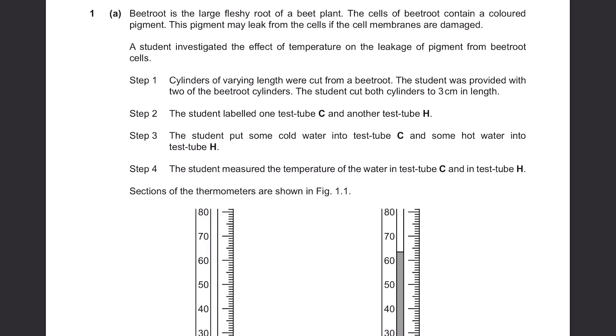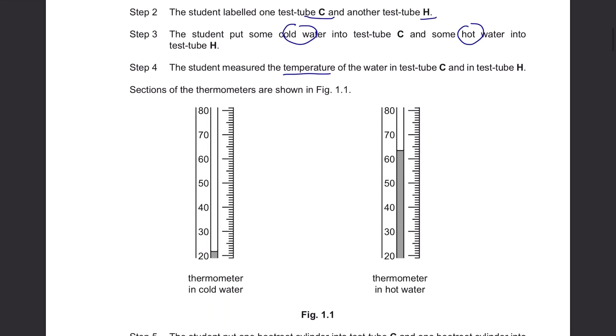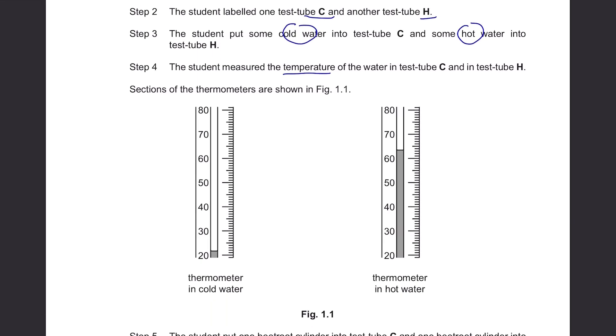Beetroot is the large fleshy root of a beet plant. The cells of beetroot contain a colored pigment. This pigment may leak from the cells if the cell membranes are damaged. A student investigated the effect of temperature on the leakage of pigment from beetroot cells. Step 1: Cylinders of varying lengths were cut from a beetroot. The student was provided with two of the beetroot cylinders. The student cut both cylinders to 3 cm in length. Step 2: The student labeled one test tube C and another test tube H. The student put some cold water into test tube C and some hot water into test tube H. Step 4: The student measured the temperature of the water in test tube C and test tube H. Sections of the thermometers are shown in figure 1.1. This is 21 degrees Celsius and this is 63 degrees Celsius.